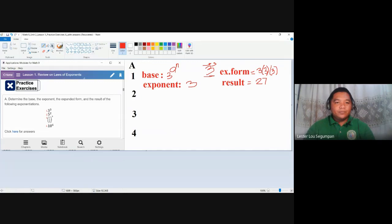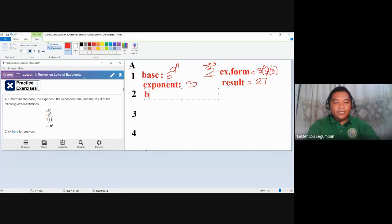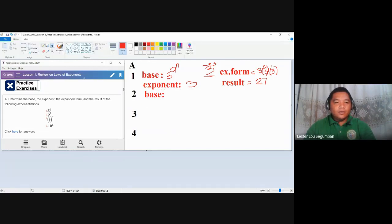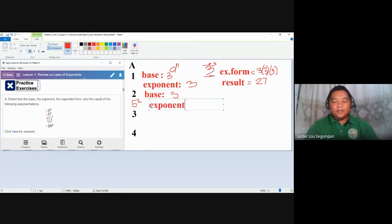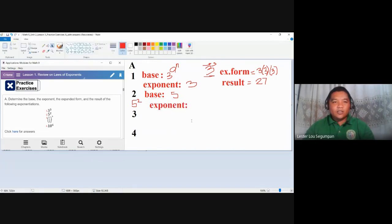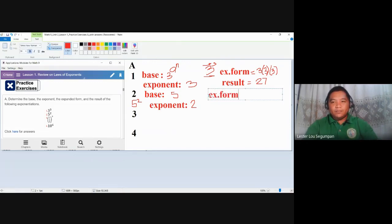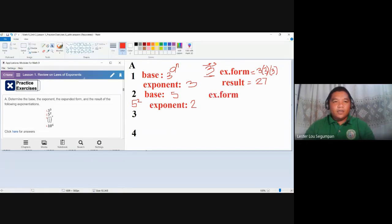As for number two, our base here, our given is, for number two, is five squared. So our base here is five. Next, our exponent is the square or a value of two. Expanded form, it means we need to multiply five to itself twice. We have five times five.